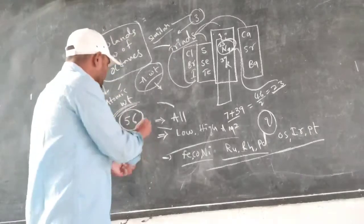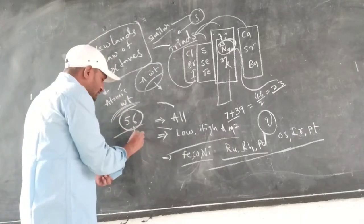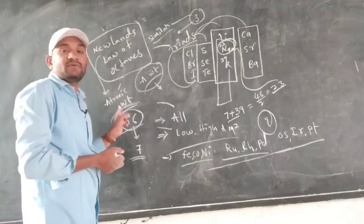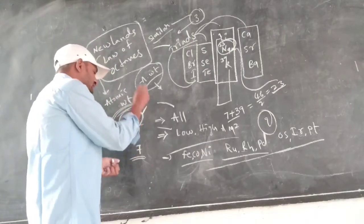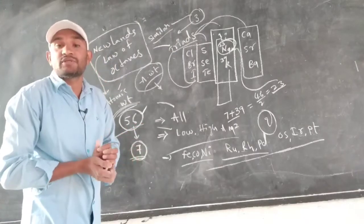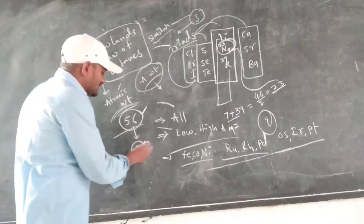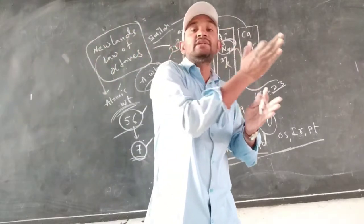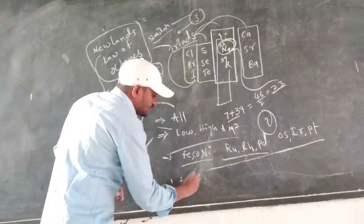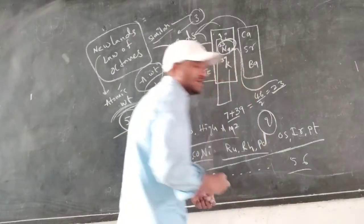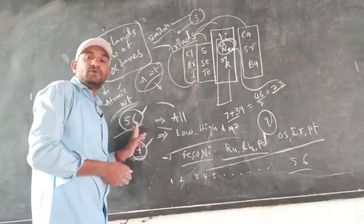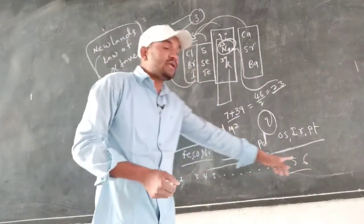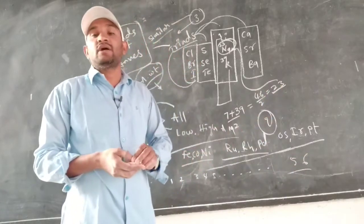He classified overall 56 elements into 7 groups. The 1 to 56 elements, on the basis of atomic weight, were arranged in ascending order — 1, 2, 3, 4, 5 like this, up to 56 elements. On the basis of the atomic weight of each element, they were arranged in ascending order only.